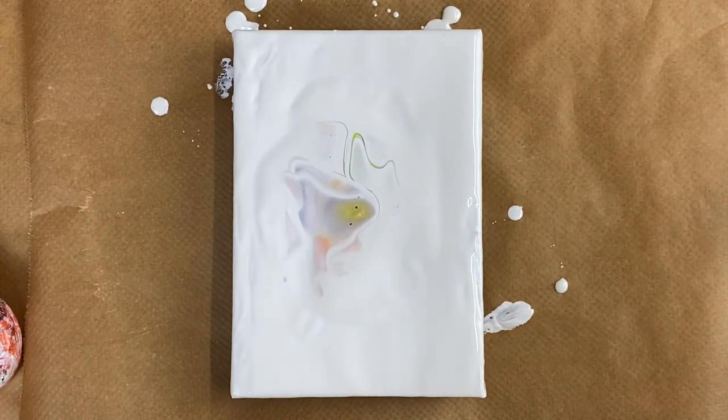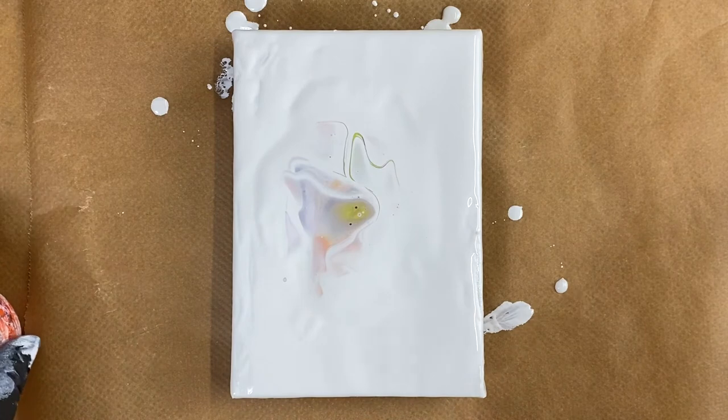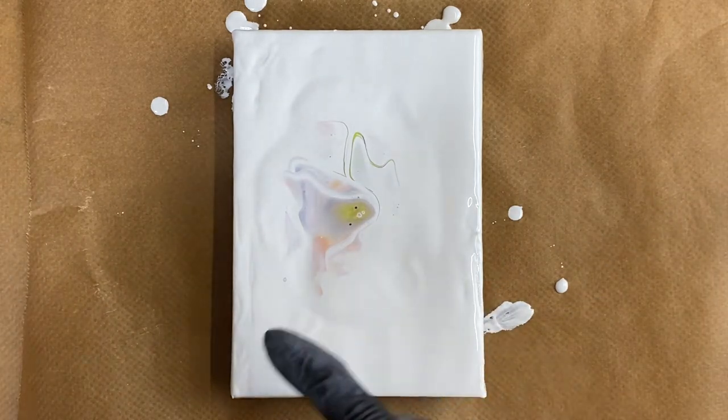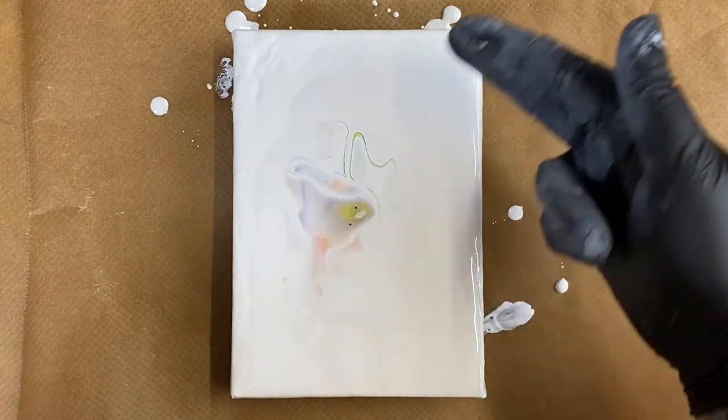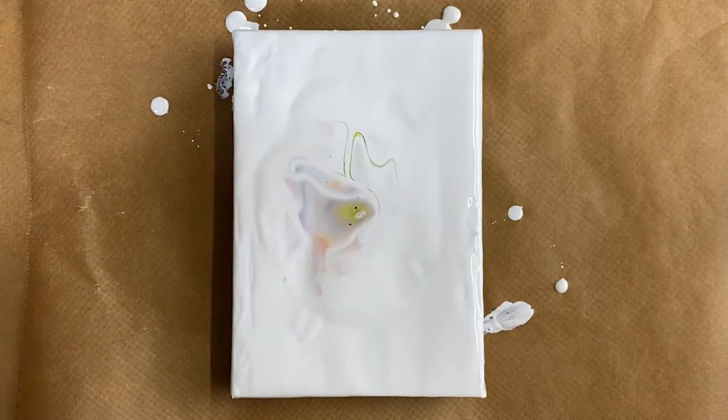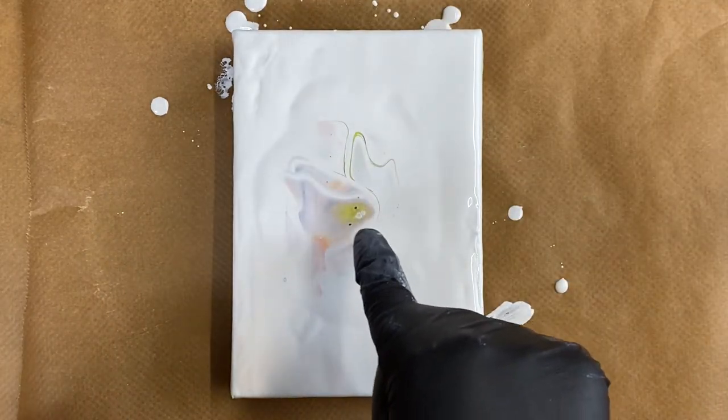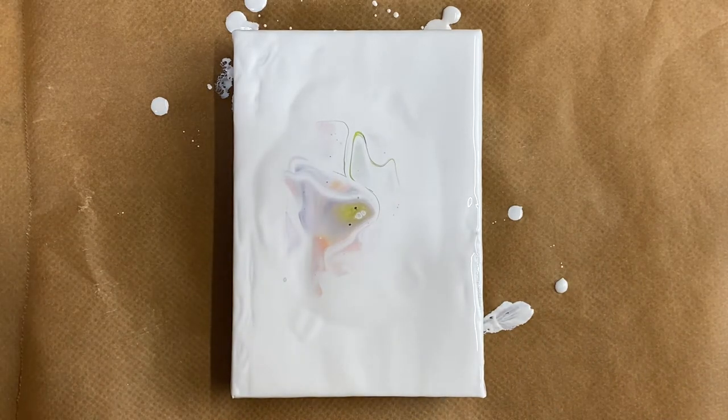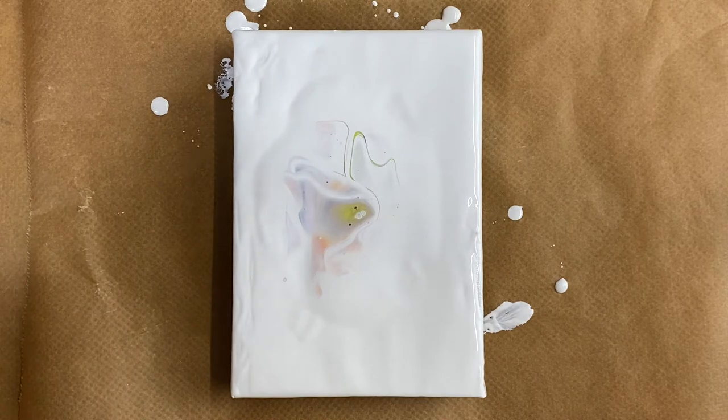It'll be interesting to see if this cells up as well as the others have with using the Montmartre. So now I'm going to blow that paint back across. You can see some cells, actually there are some cells coming up. The Amsterdam paint is good for giving cells so we'll see how it goes.